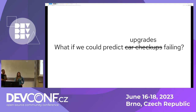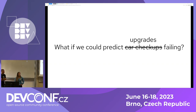What if we could predict those upgrade failures? After an upgrade has failed it's usually an emergency, especially if it affects customer workloads. A lot of people need to jump in and spend a lot of time. So what if we could predict those upgrades in advance?